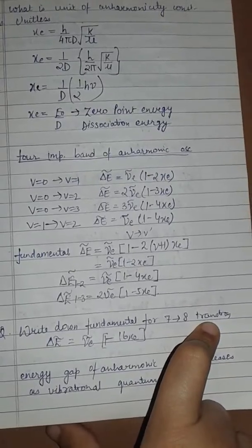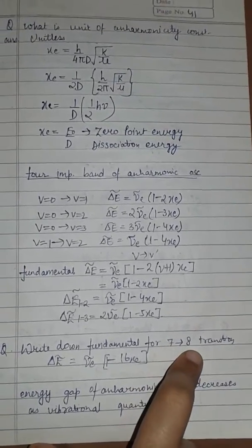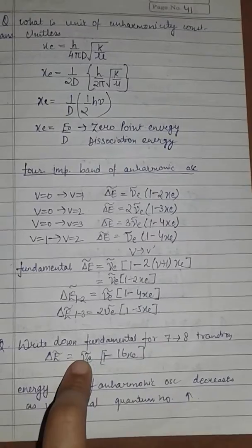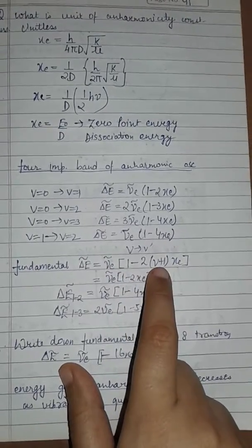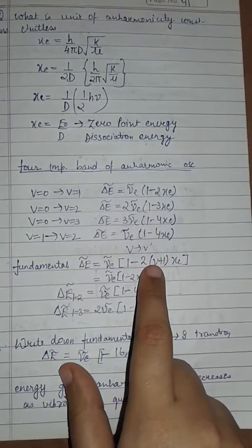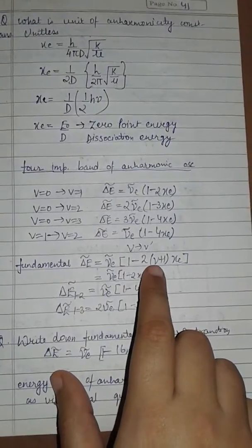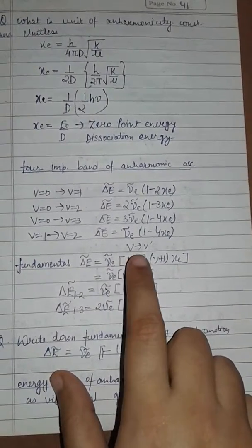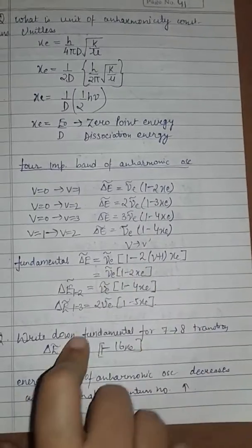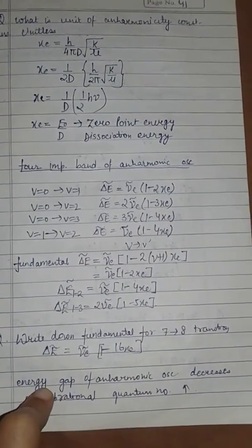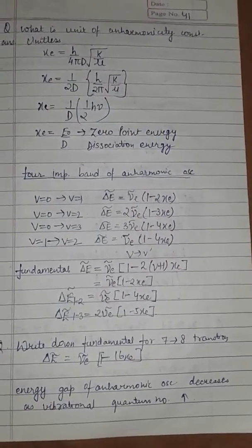For the 7 to 8 level transition, V is the lower level so V=7. Using the formula ΔE = ν_e[1 minus 2(V+1)X_e], with V=7: 2×(7+1) = 2×8 = 16, so ΔE = ν_e(1 minus 16X_e).